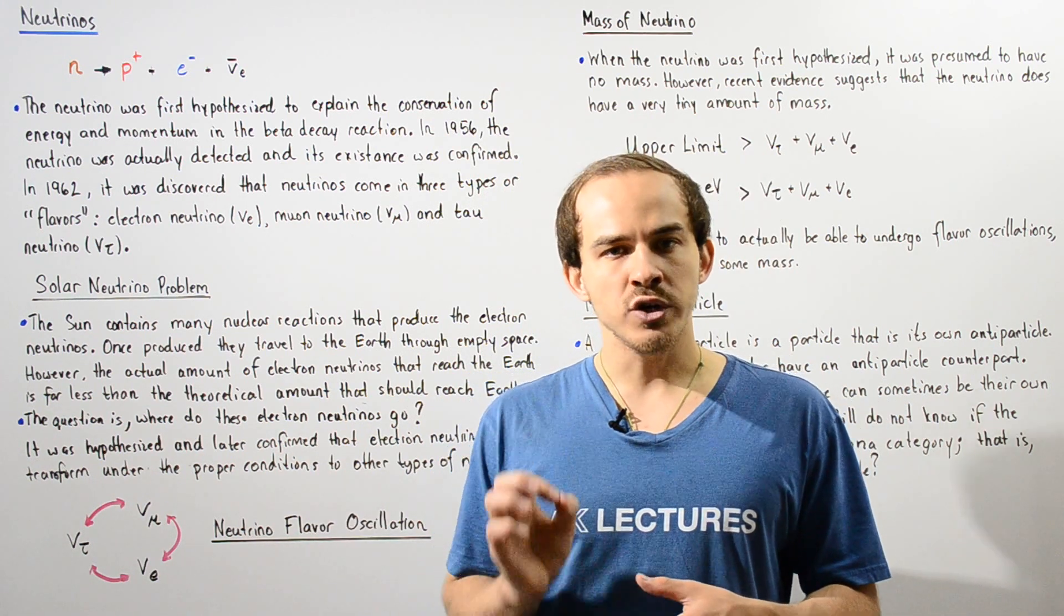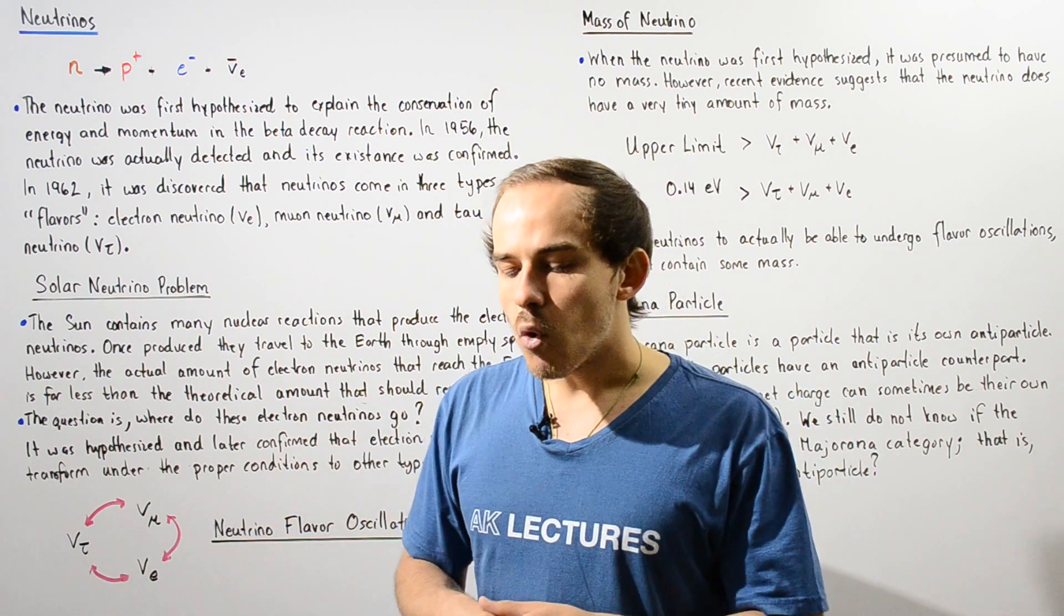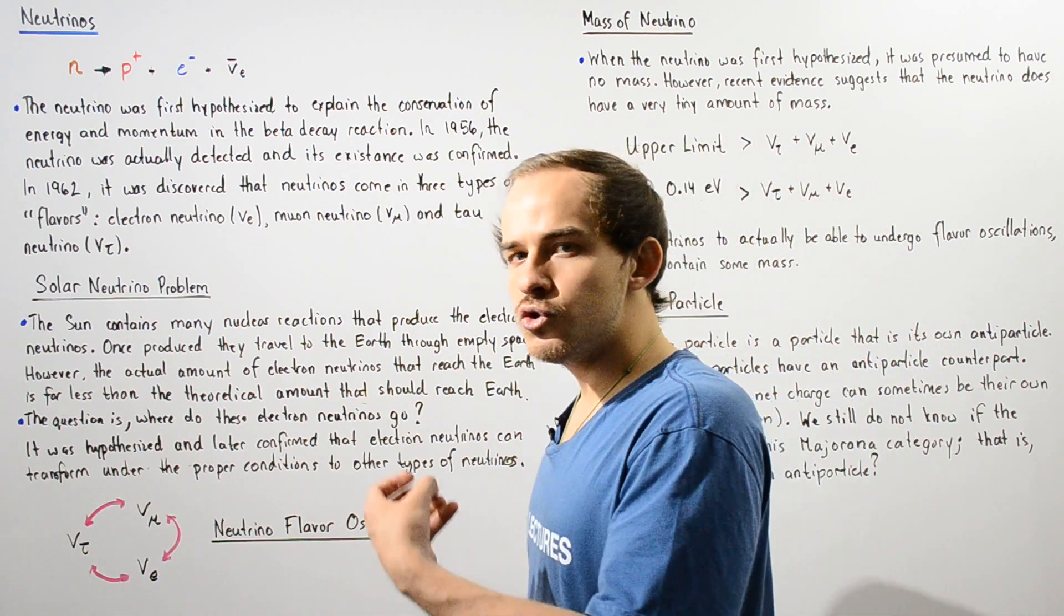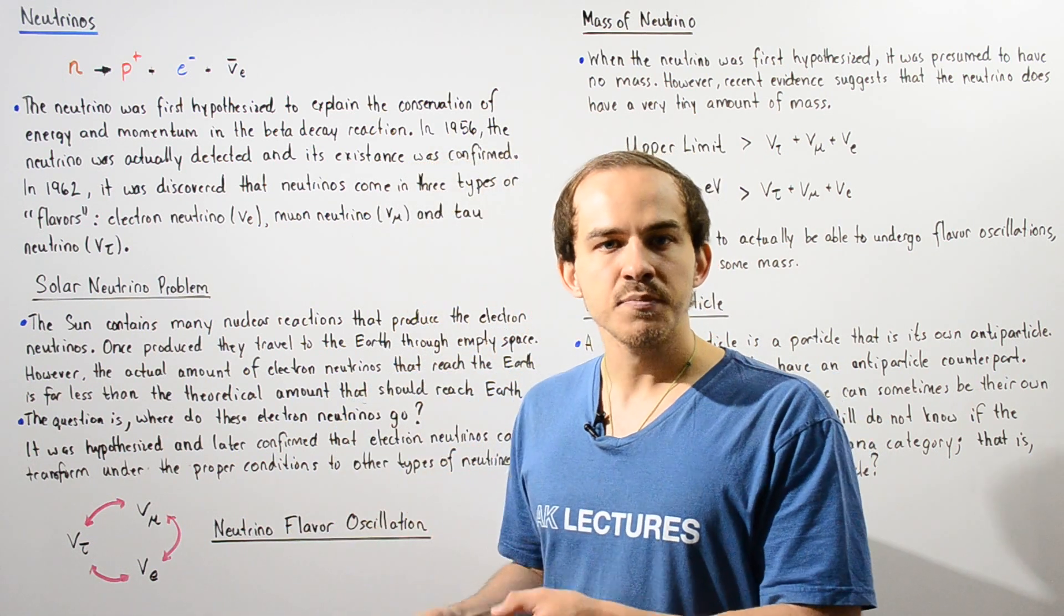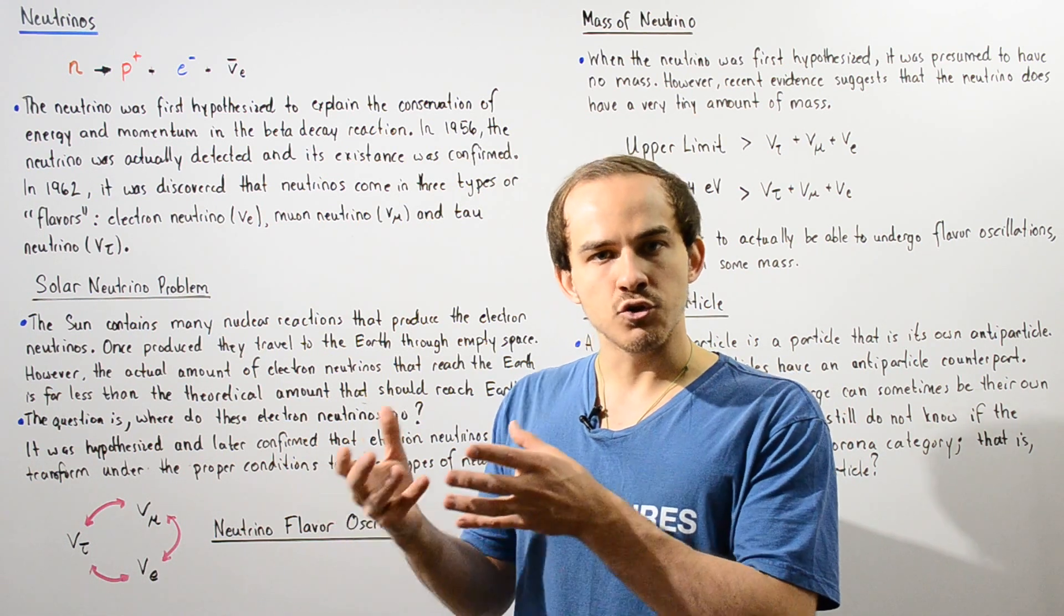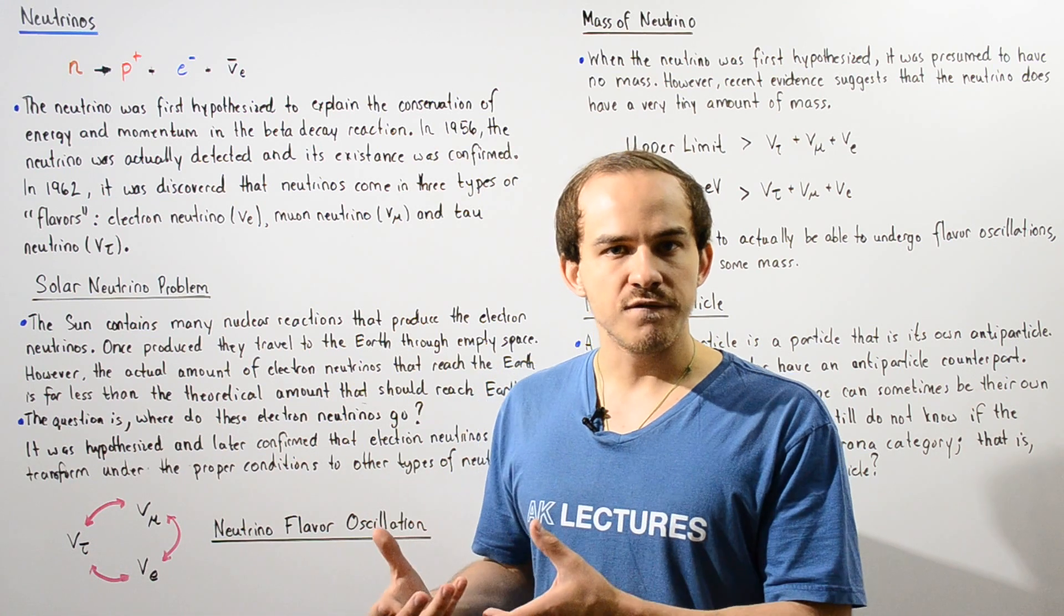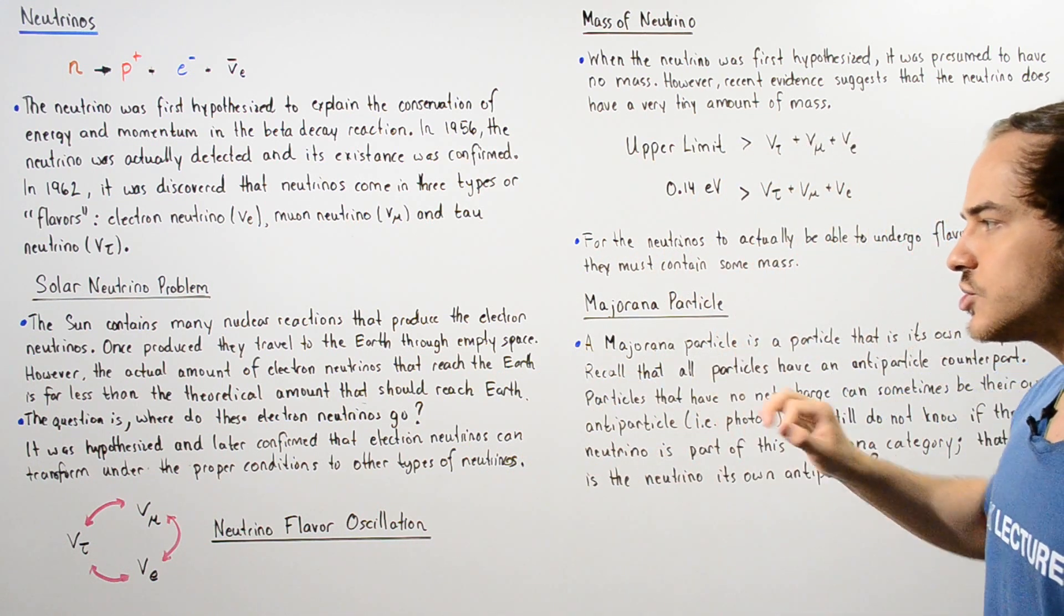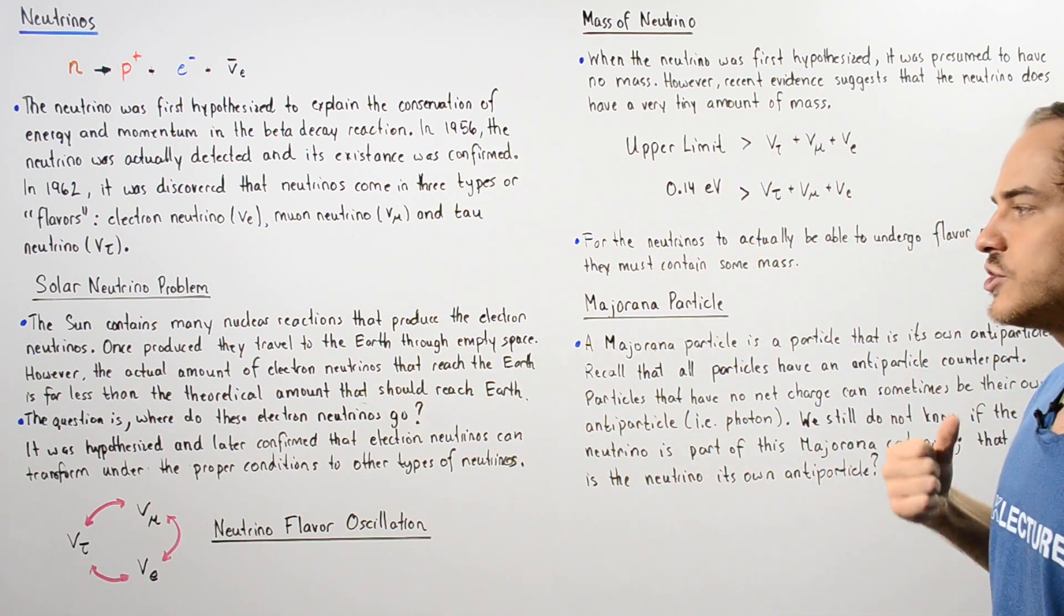And these electron neutrinos travel through space and eventually end up on Earth. Now, when scientists actually set out to calculate how much neutrinos end up on any given square centimeter of the Earth, they found that the hypothesized value for the neutrinos that should end up on Earth does not match the actual value. That is, the actual number of neutrinos that reach the Earth is far less than the theoretical amount that should reach the Earth.